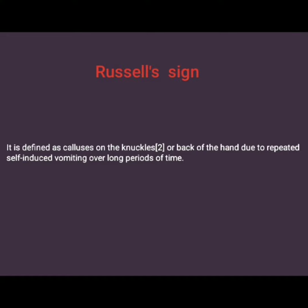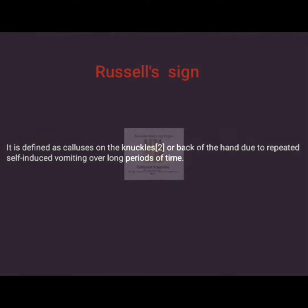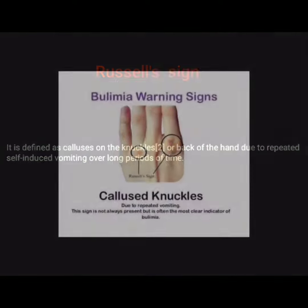Russell's Sign is defined as calluses on the knuckles or back of the hand due to repeated self-induced vomiting over long periods of time.